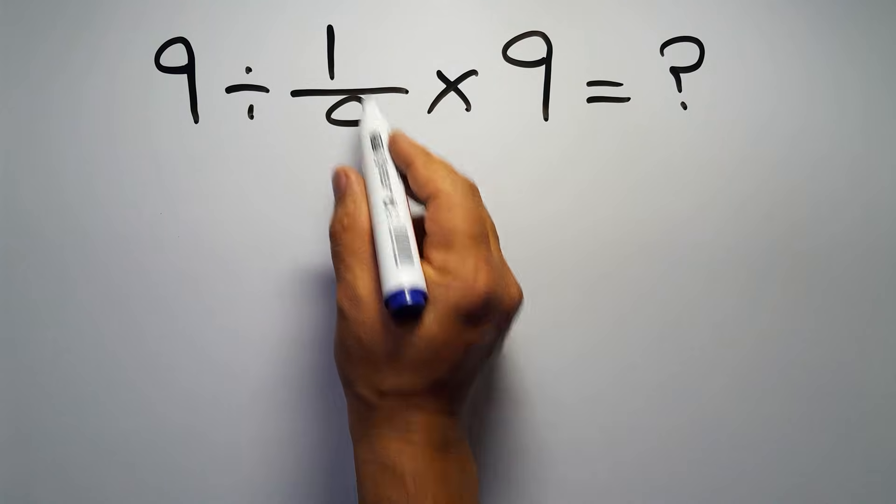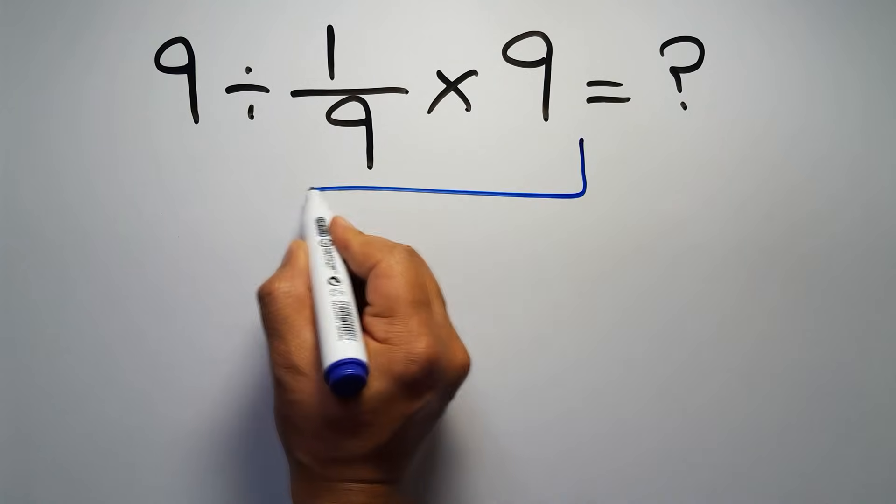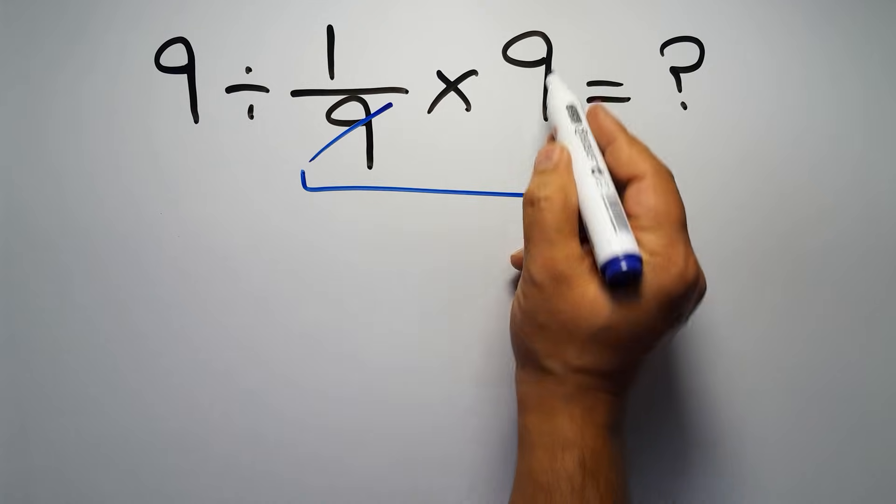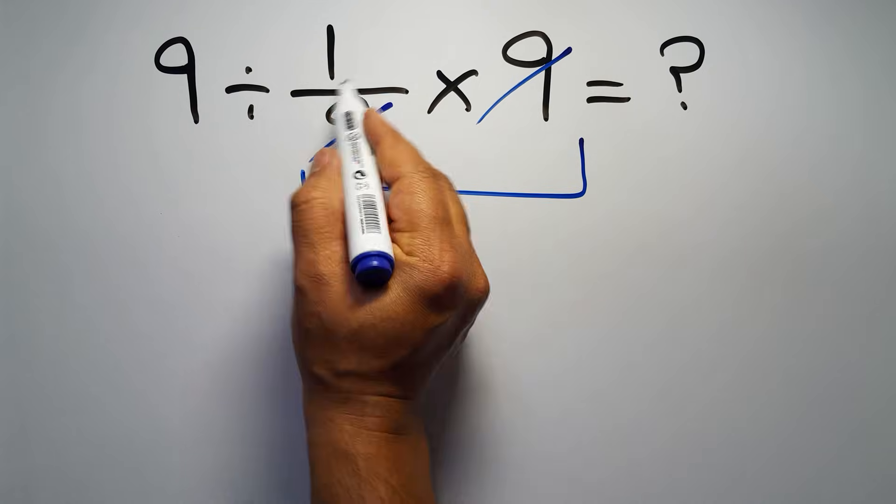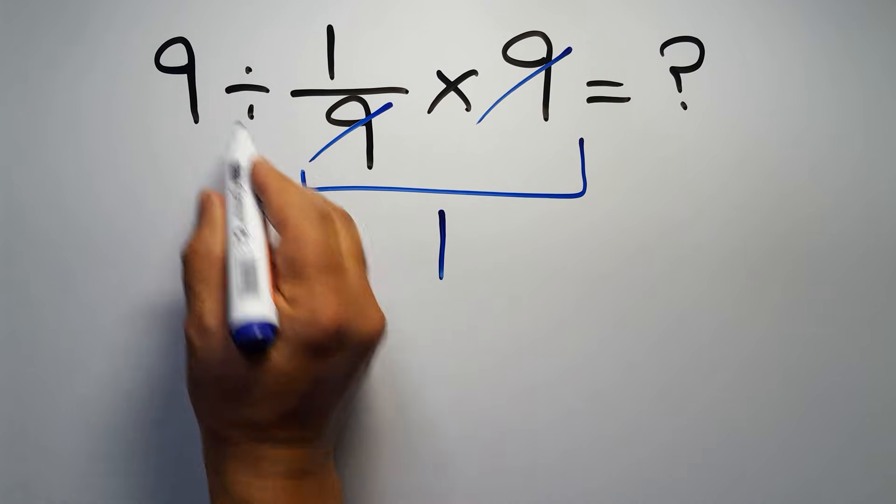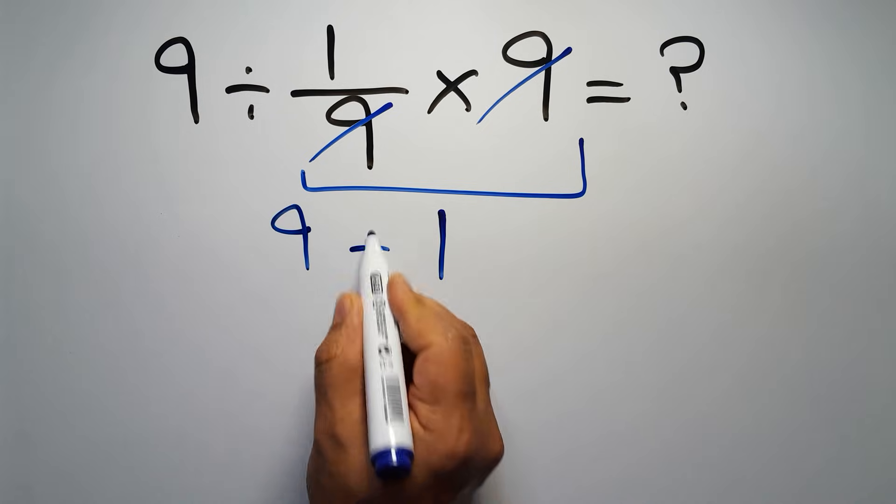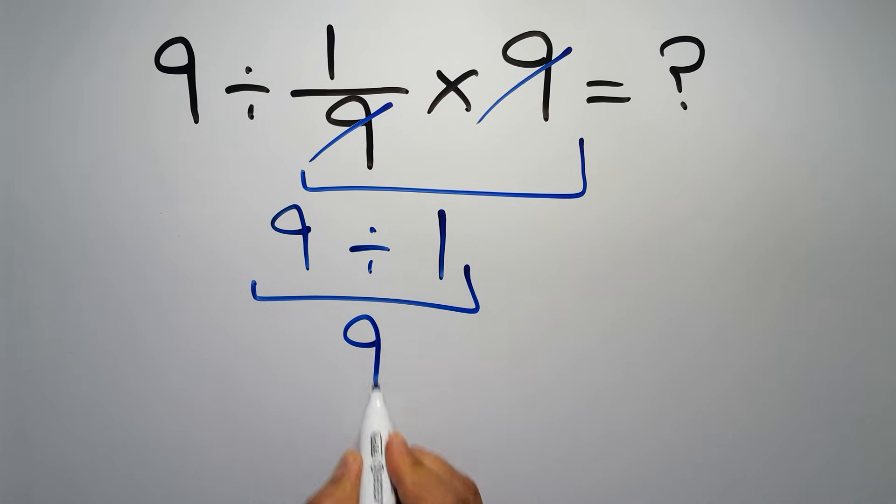First we do this multiplication: 1 over 9 times 9. We can easily cancel this 9 and this 9, so here we have just 1, and the 9 divided by 1 equals 9. But this answer is not correct because...